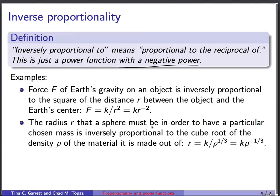Similarly, the radius that a sphere must be in order to have a particular chosen mass is inversely proportional to the cube root of the density of the stuff it's made out of. So radius equals a constant divided by density to the one third, which is the same as constant times density to the minus one third.